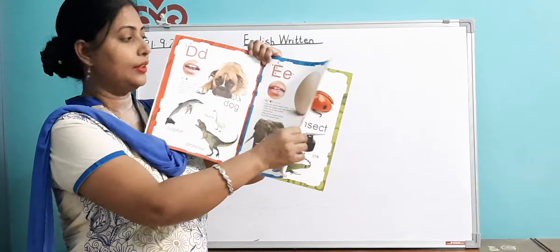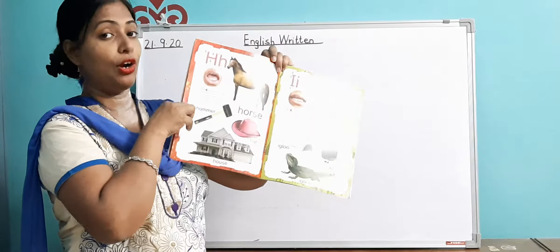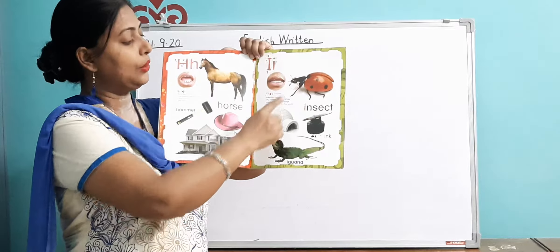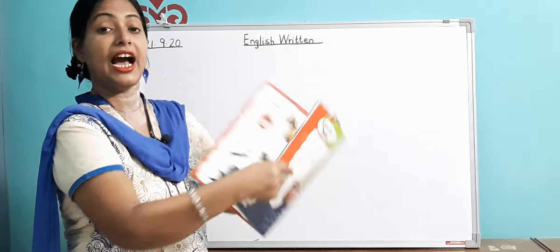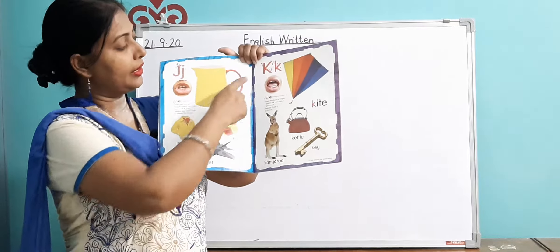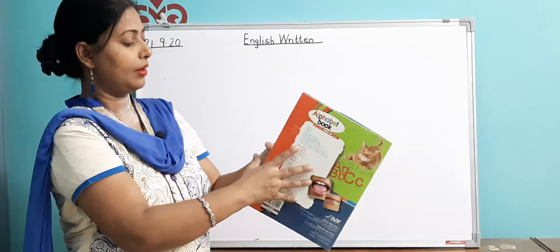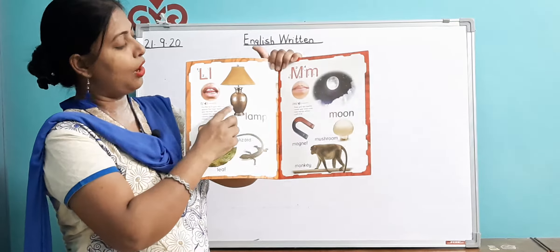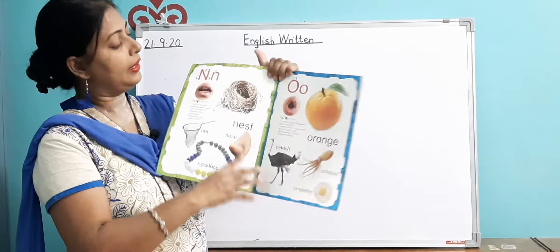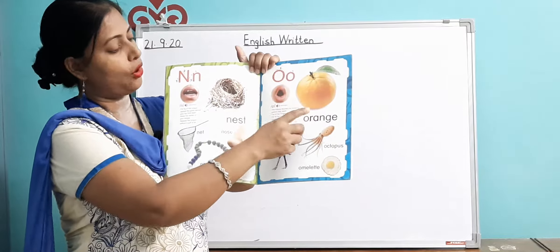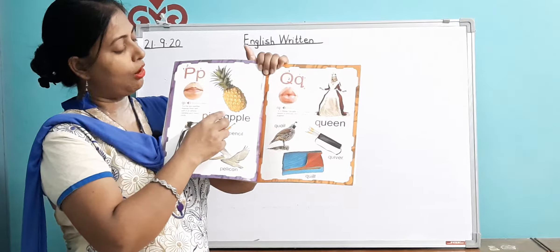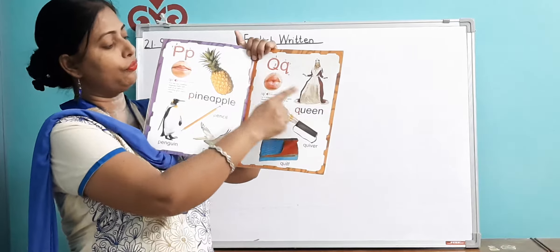E for egg, E for elephant, E for envelope. H for horse, I for igloo, I for insect, I for India, I for ice cream. J for jug, K for kite, L for lamb, M for moon, N for nest, O for orange, P for parrot, P for pineapple, Q for queen.